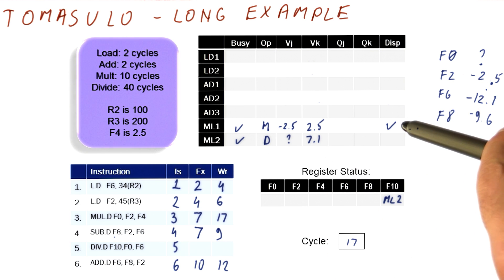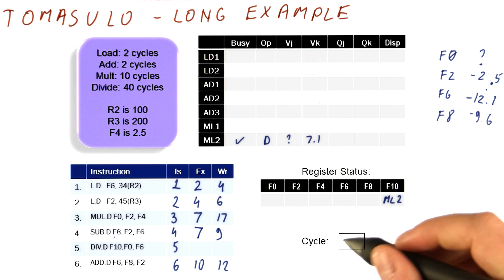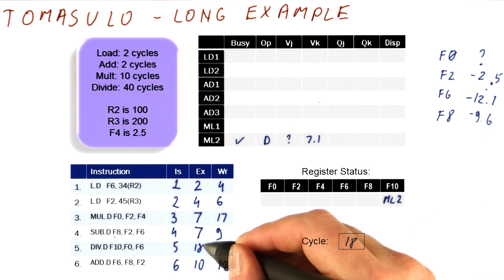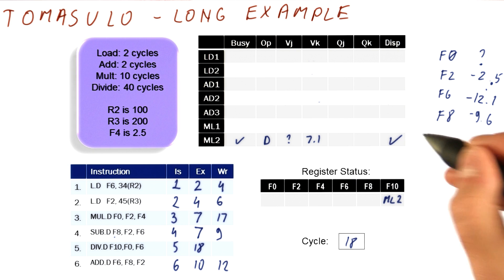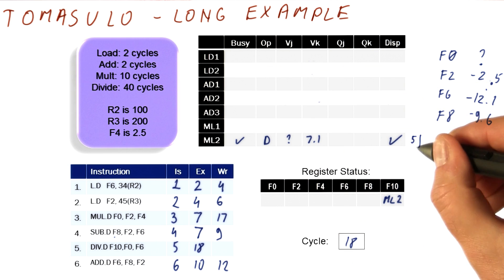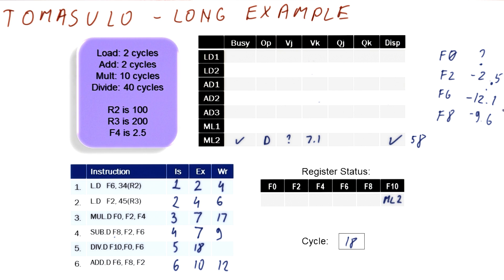So finally, in cycle 18, the divide is ready to go. It's been dispatched. Add 40 cycles. So it's going to be in cycle 58 that we finally produce that result.